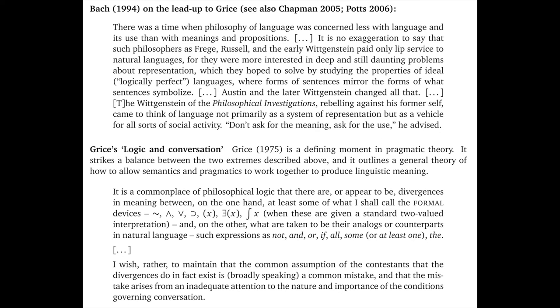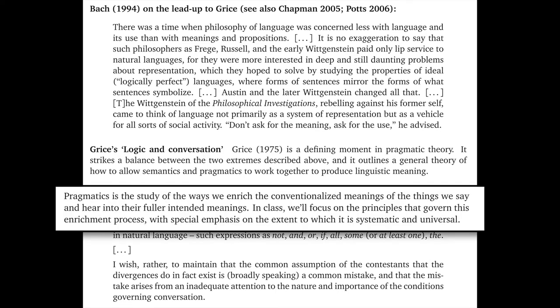But Grice disputes that. He writes: 'I wish, rather, to maintain that the common assumption of the contestants, that the divergences do in fact exist, is, broadly speaking, a common mistake, and that the mistake arises from an inadequate attention to the nature and importance of the conditions governing conversation.' That's really the big idea. The associations we just saw are real and useful, but they're about the semantics. And the apparent divergences arise systematically from the semantics and the nature of communication. He's really saying what I said when I defined pragmatics: this is the study of the way we enrich the conventionalized meanings of the things we say and hear into their fuller intended meanings. We take this framing for granted now, but it was really Grice who first articulated it in a compelling and clear way.